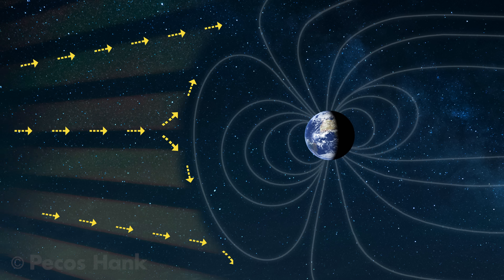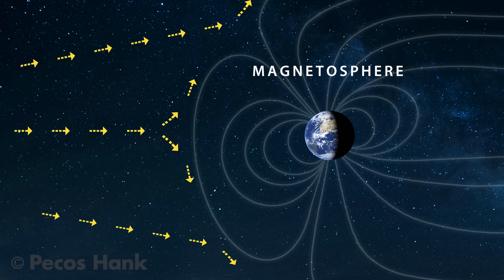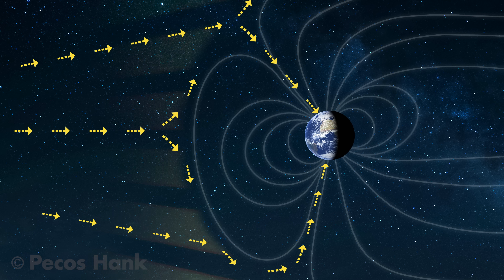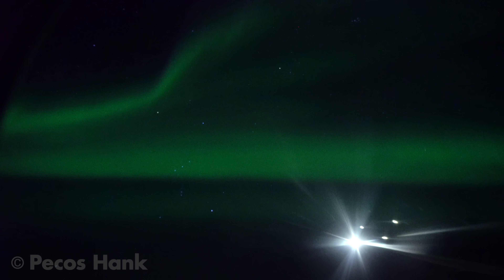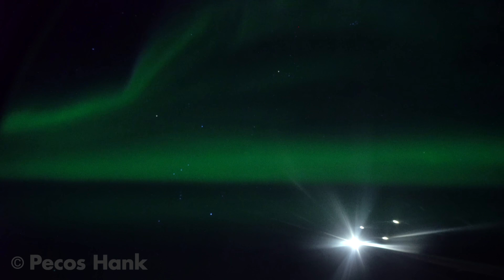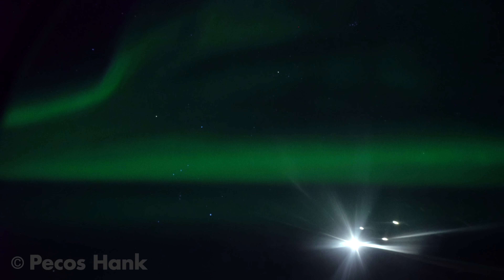Most of the solar wind is deflected away by our magnetosphere, but a small percentage is channeled down lines of force in our magnetic field toward the Earth's poles. The solar wind then collides and transfers energy to oxygen and nitrogen in the Earth's atmosphere.